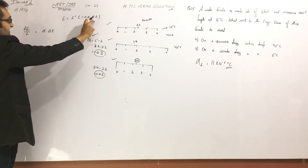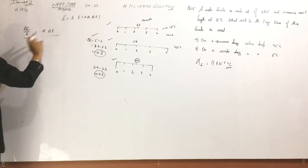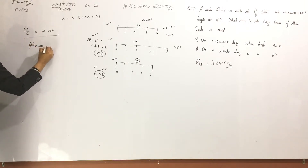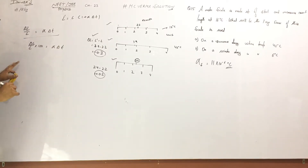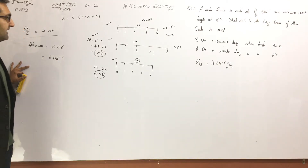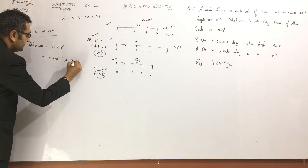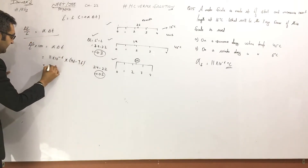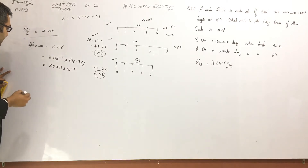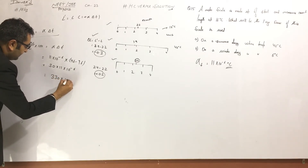Opening this out, delta L by L multiplied by 100 is equal to alpha times delta T. Alpha is given as 11 into 10 to the power minus 6. And delta T is equal to 46 minus 16, which is 30. So 30 into 11 into 10 to the power minus 6 gives 3.3 into 10 to the power minus 4, which equals 0.33 into 10 to the power minus 2. The answer for the summer day percentage error is 0.33.